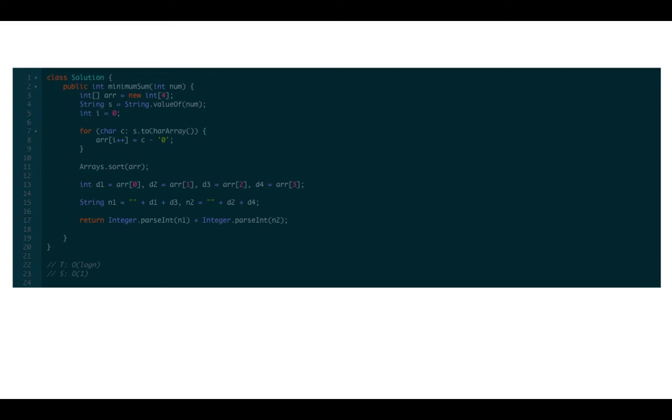Let's work through the code. We can find the minimum sum by summing up two digit numbers. We use two smaller digits as the digits found in the tenth place and two larger digits as the digits found in one place.